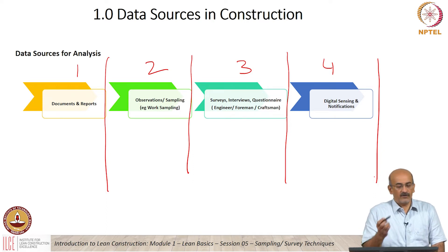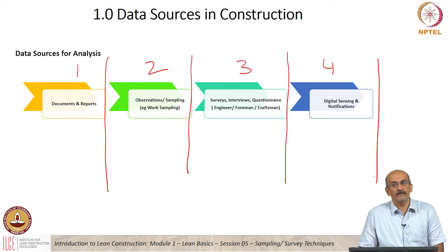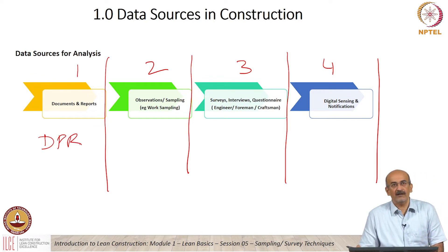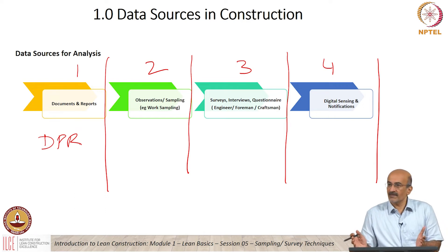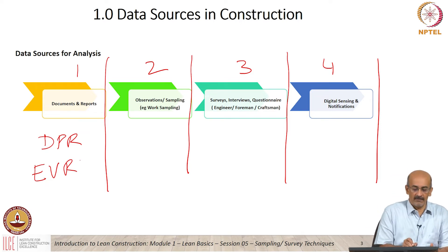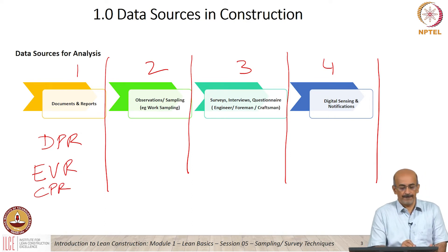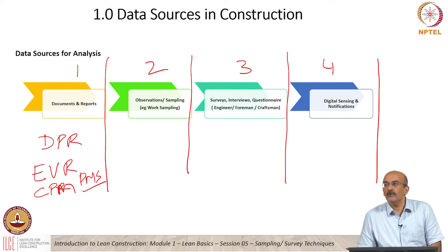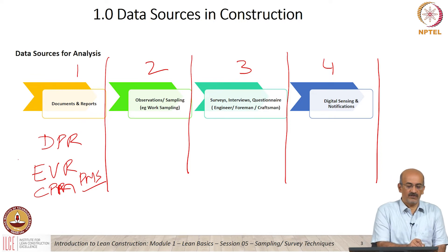If I take documents and reports — can someone give me an example of what is typically a document or report from a construction site? A daily progress report is a document or report which is actually documented on the site, and from a DPR I can get data to analyze what is happening on a daily basis. My earned value report, my critical path method reports — all of these are documents and reports. The productivity measurement systems are also a documented way to assess productivity and take control. These are approaches which we are all familiar with.